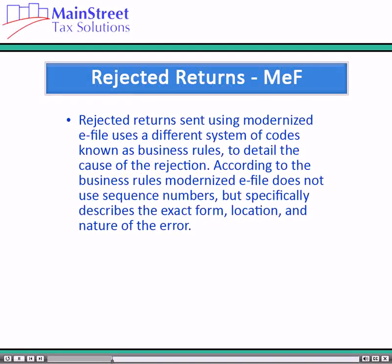Rejected returns sent using modernized e-file use a different system of codes known as business rules to detail the cause of the rejection. According to the business rules, modernized e-file does not use sequence numbers, but specifically describes the exact form, location, and nature of the error.